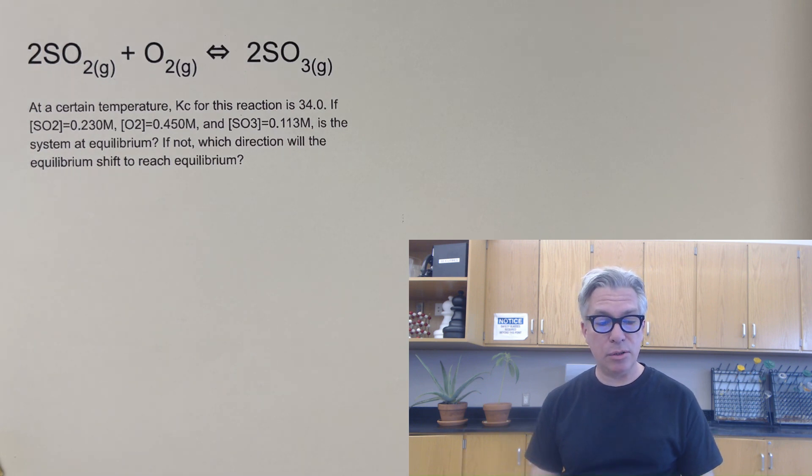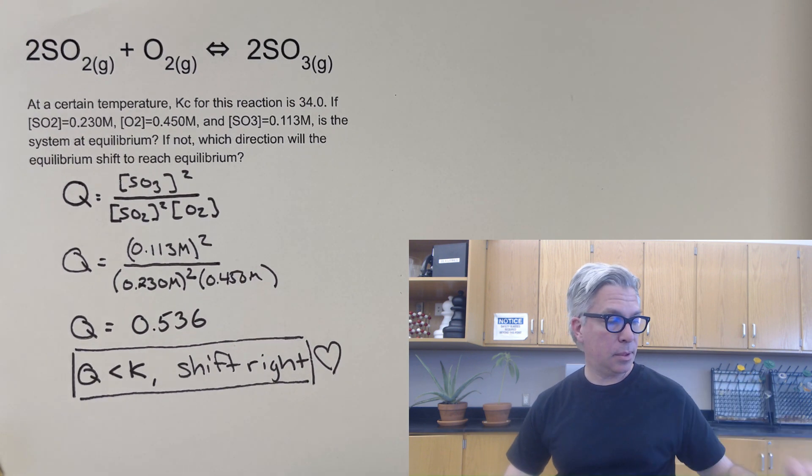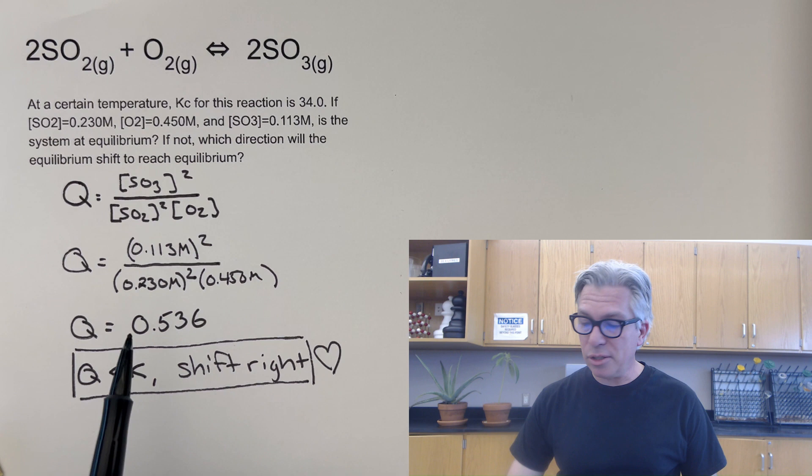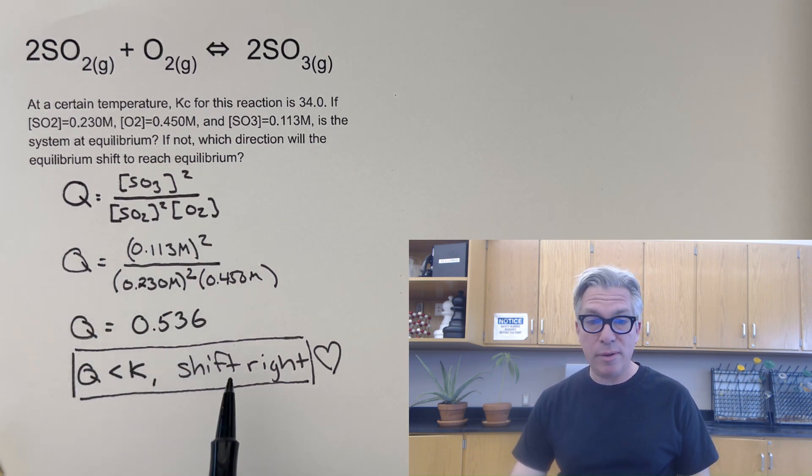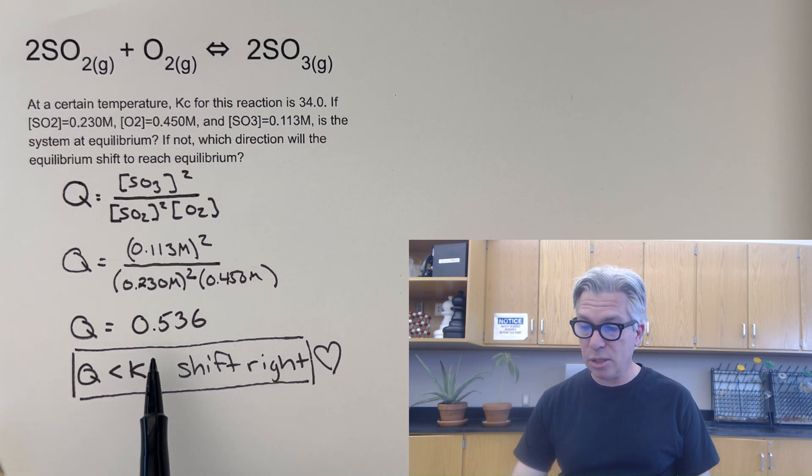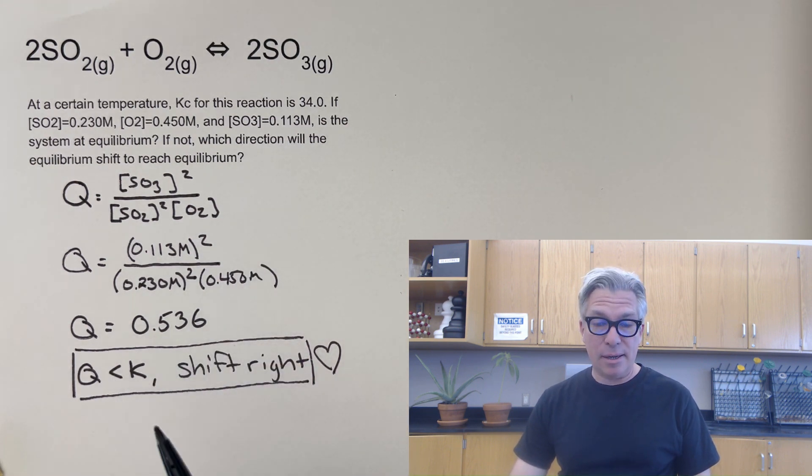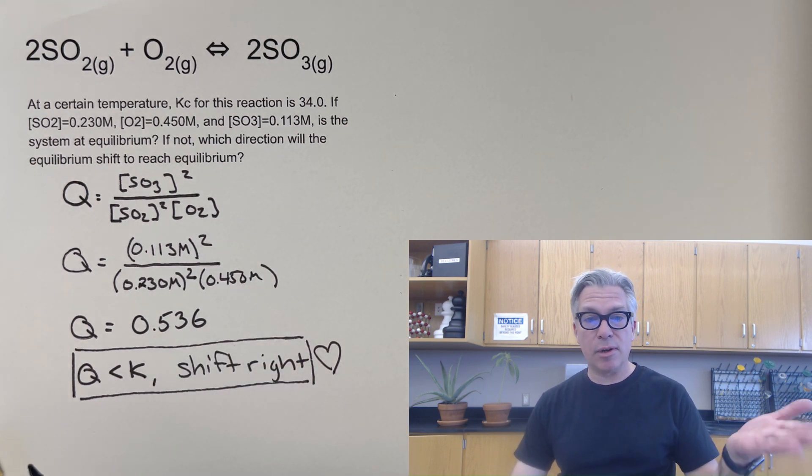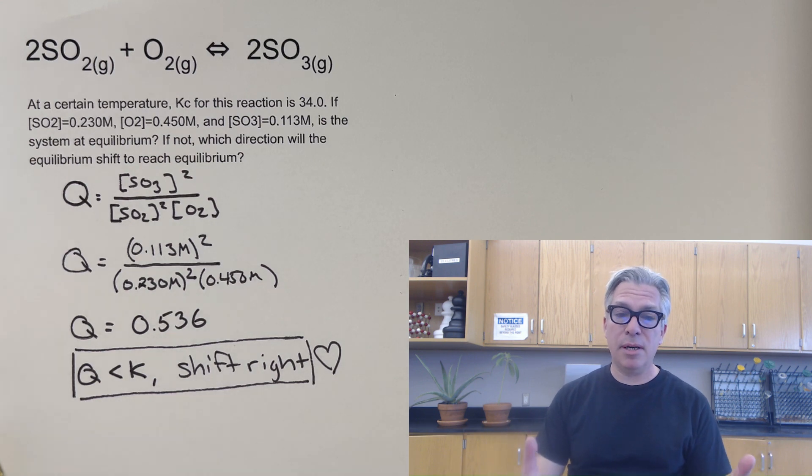And welcome back. If you were able to do that and find out that the reaction is going to shift to the right this time, then congratulations. We have a Q value, Q expression. We plug in our values. I got a value of 0.536, which to me is much smaller than the equilibrium constant, which is 34. And that means Q is less than K. So we're going to have to take some more of our reactants and make products to make the ratio bigger. And that will mean a shift to the right.